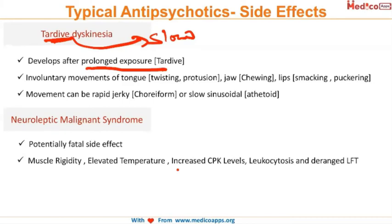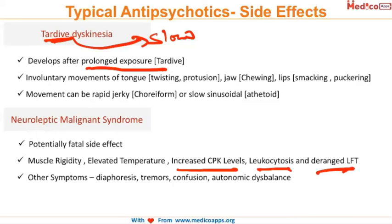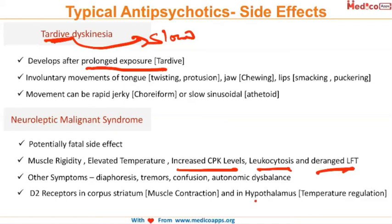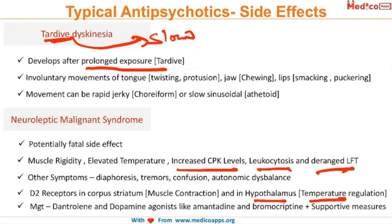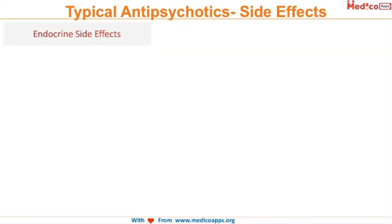Neuroleptic malignant syndrome (NMS) is a potentially fatal side effect of antipsychotics. It presents with muscle rigidity, muscle damage, elevated temperature, increased CPK levels, leukocytosis, and deranged LFTs. Other symptoms include diaphoresis, tremor, confusion, and autonomic imbalance. D2 receptor blockade in the corpus striatum causes muscle contraction and in the hypothalamus causes temperature increase. Management is an emergency: dantrolene plus dopamine agonists like amantadine and bromocriptine, along with supportive care.